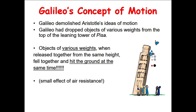In fact, Galileo destroyed and demolished the ideas of Aristotle on motion. Galileo dropped objects of various weights from the top of the Leaning Tower of Pisa. According to his observations and experiments, he found that objects of various weights, when released together from the same height, will fall together and hit the ground at the same time. This is completely different from what Aristotle would say. Of course, we have to ignore the effect of air resistance.